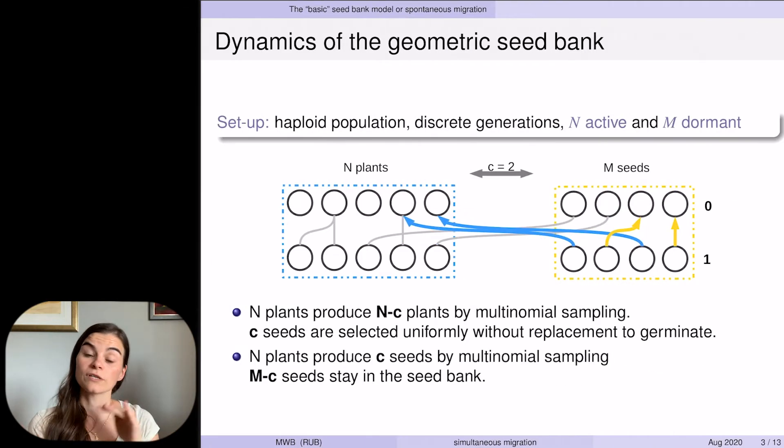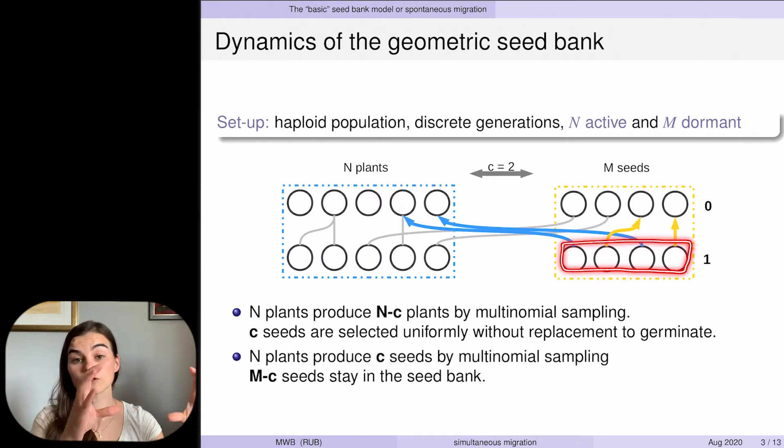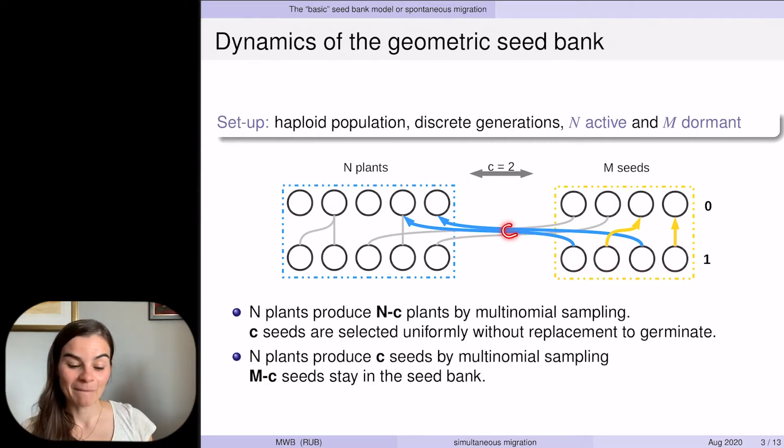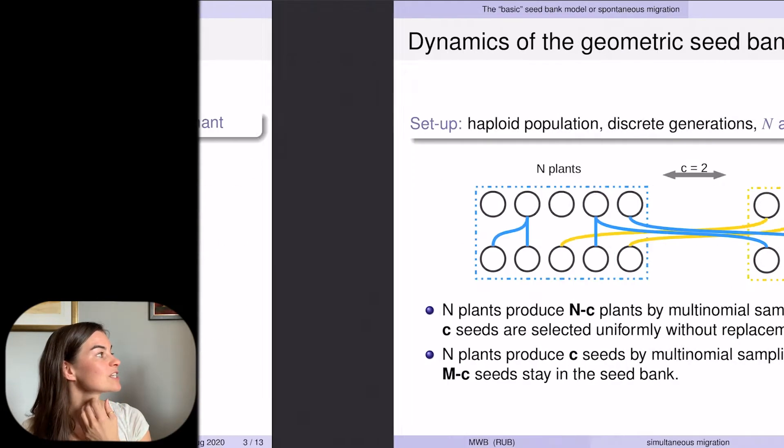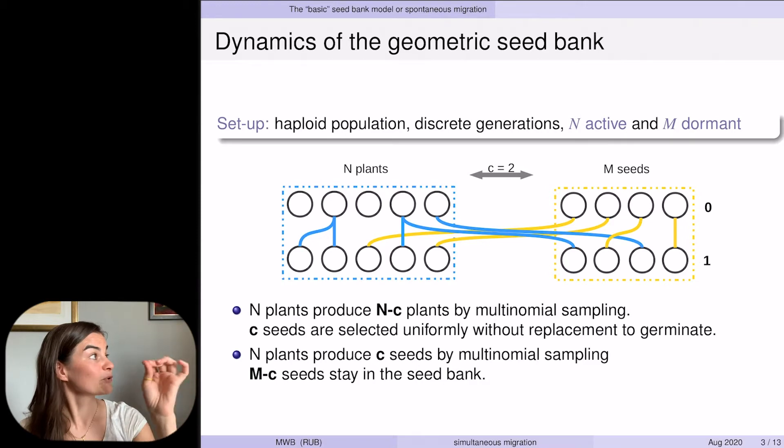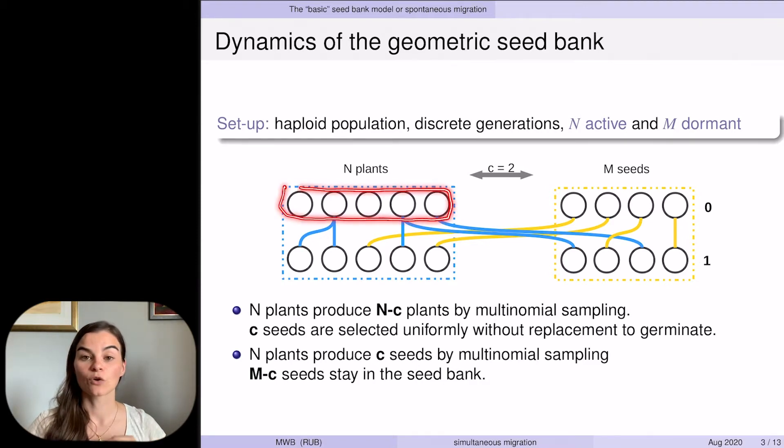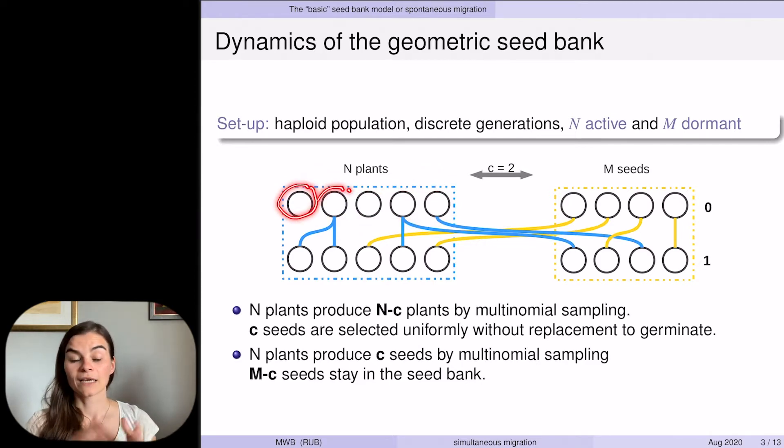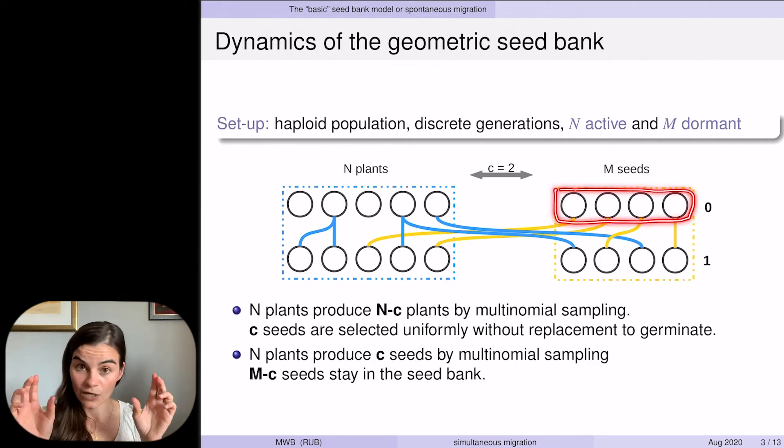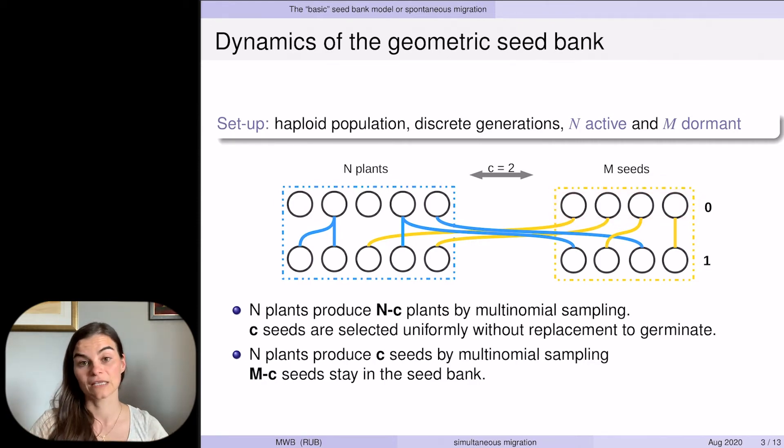For the seeds, of course, the roles are inversed. Most of the seeds will choose a seed parent, whereas C many will choose a plant parent. The most important rule is that plant parents are chosen with replacement, so they might have zero or several offspring, while seed parents are chosen without replacement. So there's always exactly one copy of the seed in the next generation.